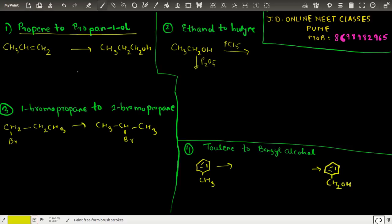So this is propene, we need to convert to propan-1-ol. The idea is very simple - you need to have a hydration, but the hydration has to be anti-Markovnikov, because if it is Markovnikov then the OH will come at the second carbon.